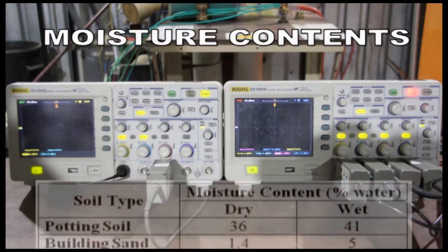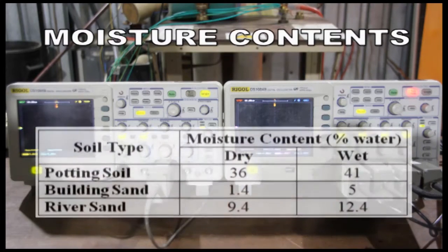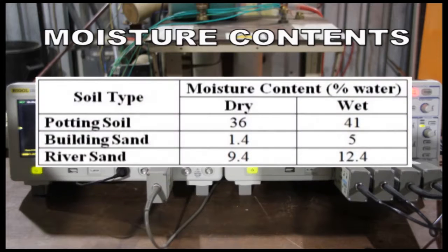Several samples of each soil type were taken. These were weighed, dried in the oven, and weighed again to determine the existing moisture content. Once the impulse tests were completed on these dry samples, water was added to each of the soil types to increase the moisture content as shown.